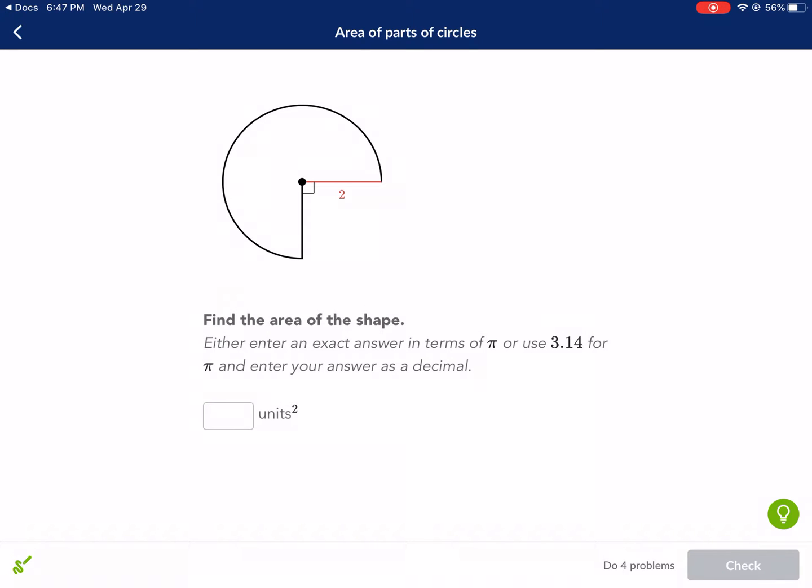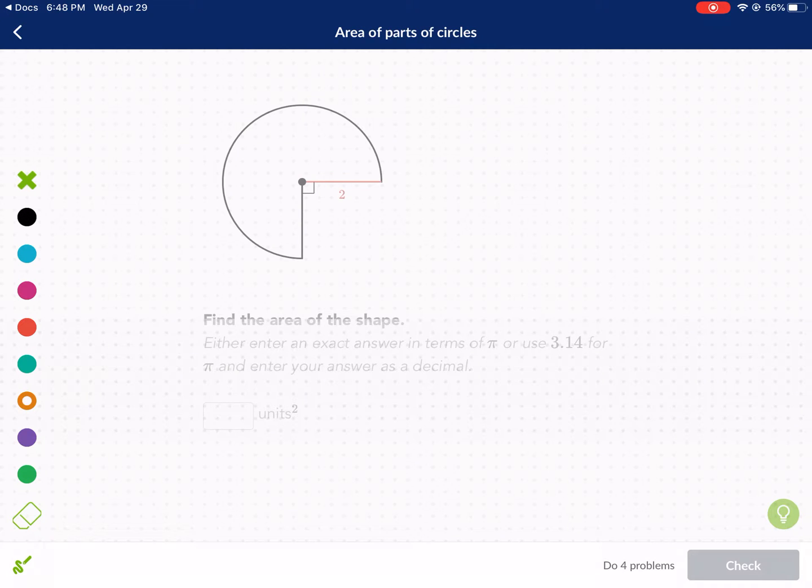Hello everyone, welcome to West Explains Best. We're doing a Khan Academy tutorial today on area of parts of circles. It asks us in this particular example to find the area of the shape, either enter as an exact number or in terms of pi. We're going to try to leave it in terms of pi, that's what I prefer as a geometry teacher. It looks like we have a Pac-Man going on here, it's not a complete circle.